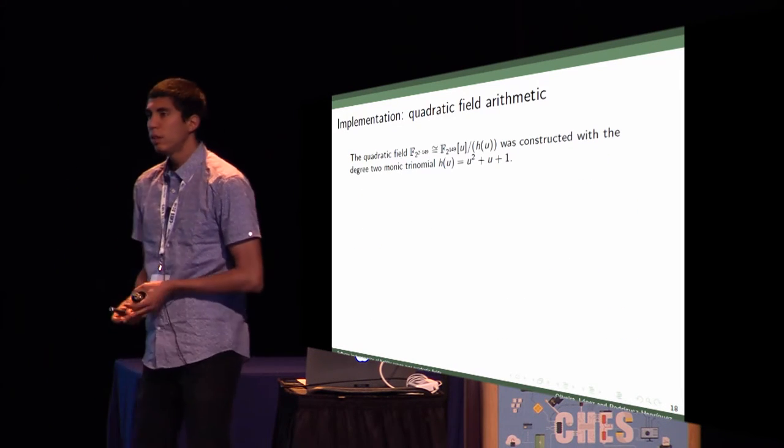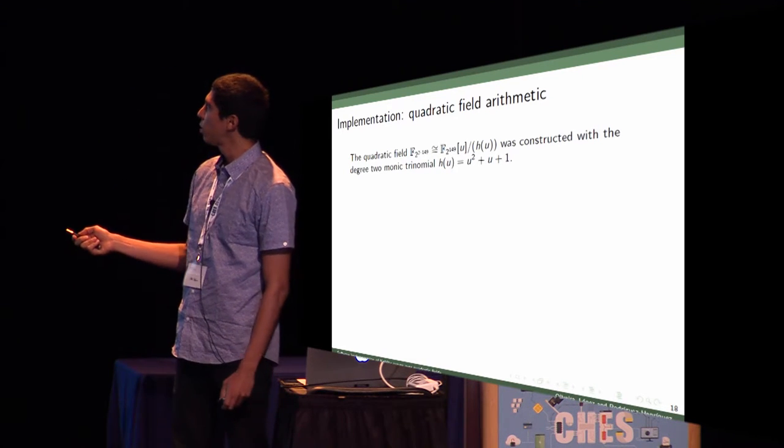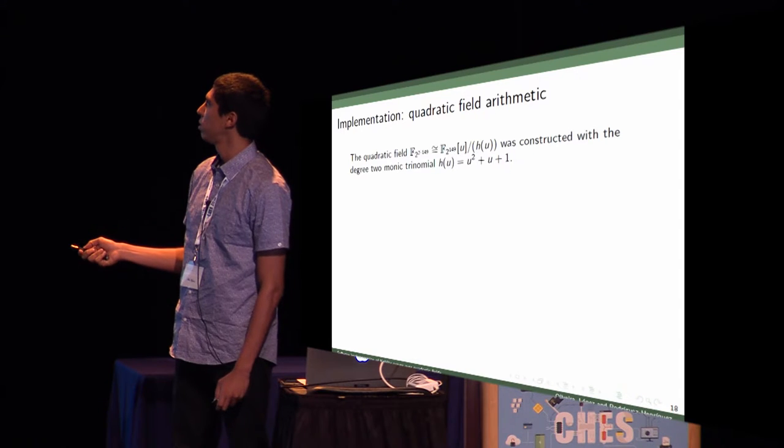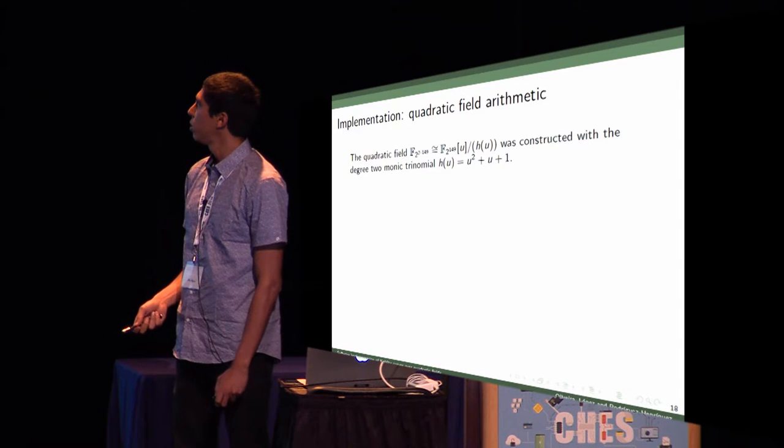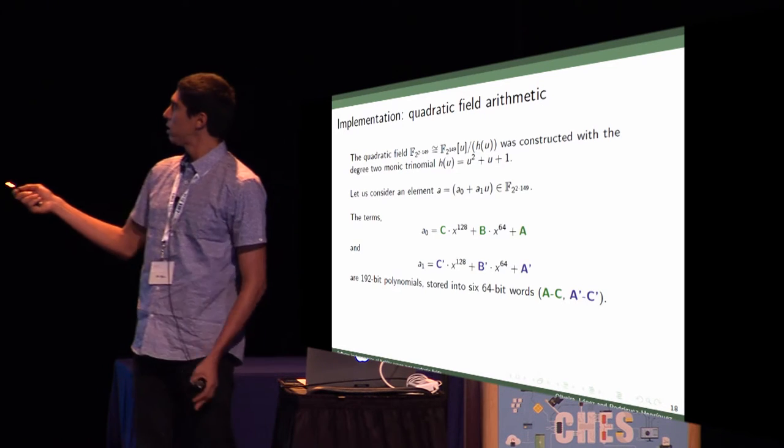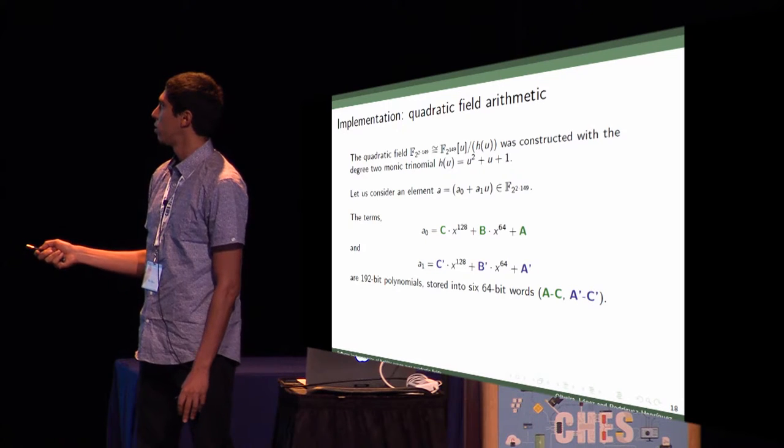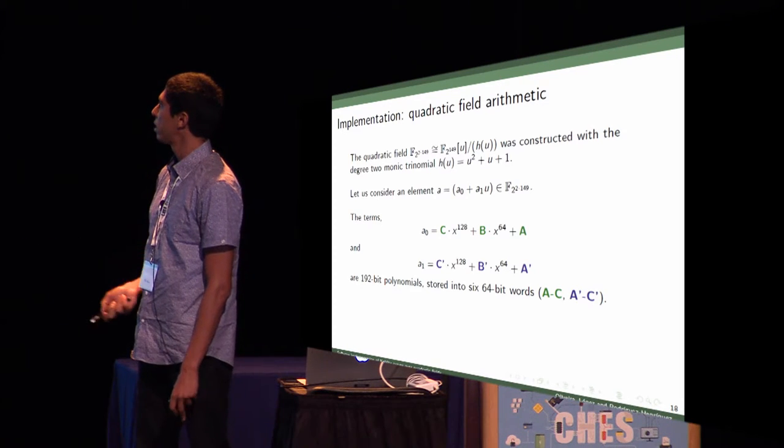This is our base field arithmetic. Let's move to our quadratic field. As usual, we construct our quadratic field using this trinomial, U squared plus U plus 1. Our elements in this quadratic field are represented like this. We have two terms, the linear and the constant term.